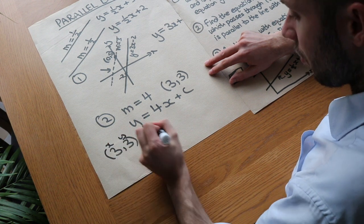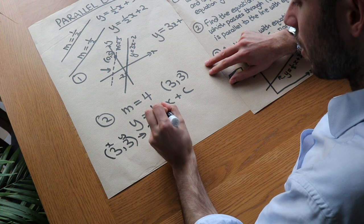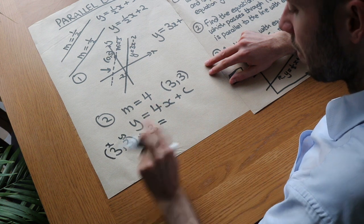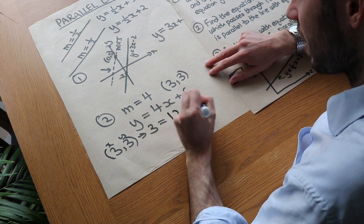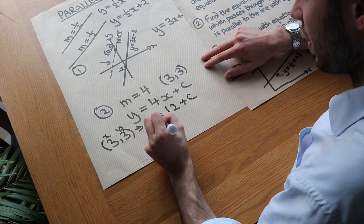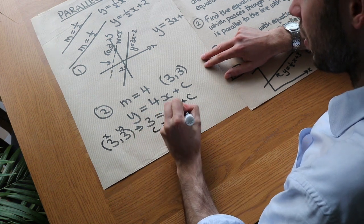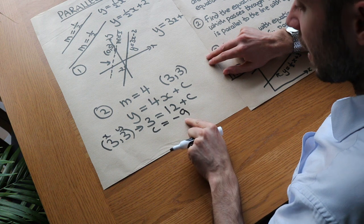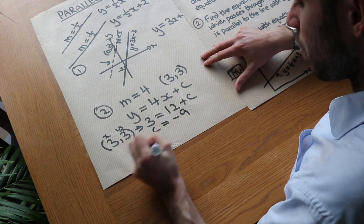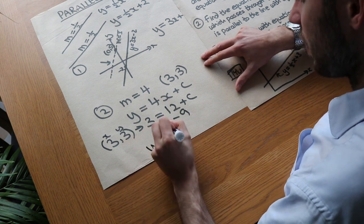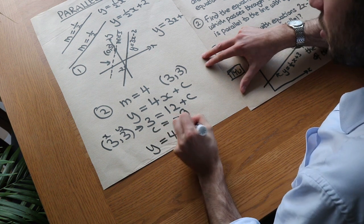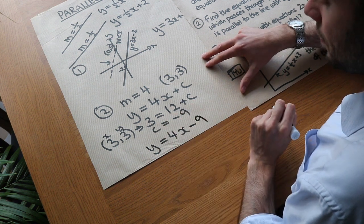Substituting in: y, which is 3, equals 4 times x, which is 4 times 3, giving 12, plus c. Subtracting 12 from both sides, we can see that c equals minus 9. We've got the m and the c, so we have everything we need. The equation is y equals 4x minus 9.